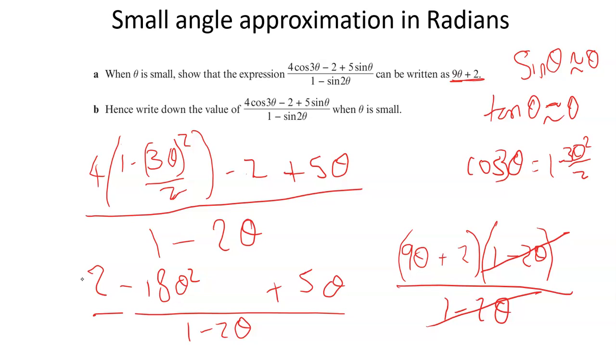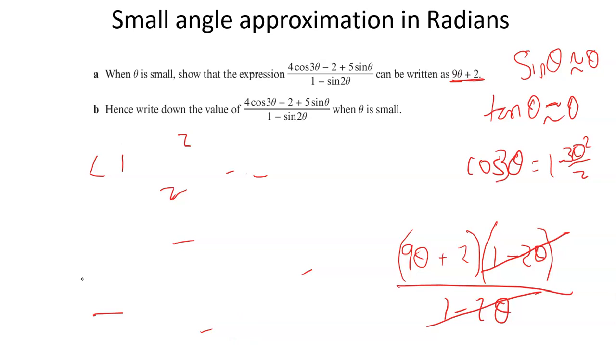So hence, write down the value of this. The fact that it says write down means it should be really easy. Well, if theta is really small, like really small, then 9 times something really small is equally really, really small. We're not interested in that. So 9 theta plus 2, as that gets smaller and smaller and smaller, it just fades away to nothing. And so as x tends to 0, then the answer of this is tending to the value 2.